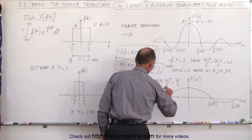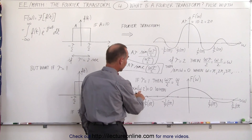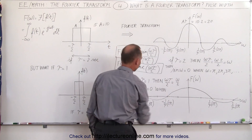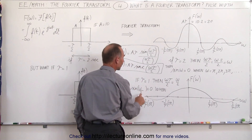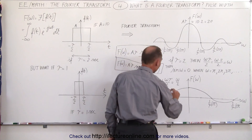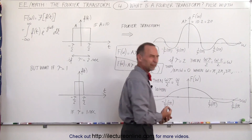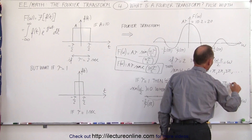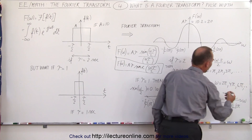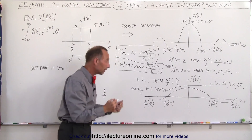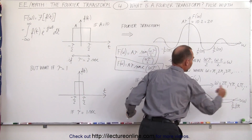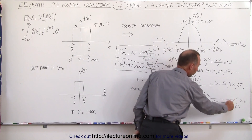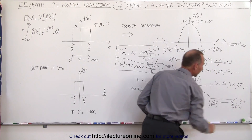The sine of omega/2 equals zero when omega equals 2π, 4π, 6π, and so forth — and of course in the negative direction as well. This widens the whole function in the frequency domain: instead of crossing zero at π, it now crosses at 2π, 4π, and so forth.